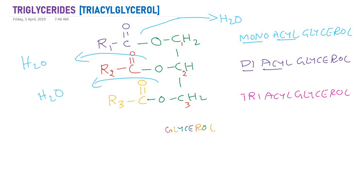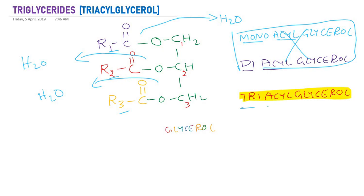So this is the esterification of fatty acids with glycerol. We have three fatty acids — R1COOH, R2COOH, R3COOH — esterified with the alcohol groups of glycerol, giving us triacylglycerol. The ester bond is the bond between the carboxyl group and the hydroxyl group of alcohol, and looks like R–C(=O)–O–R. This is the complete structure of triglycerides.